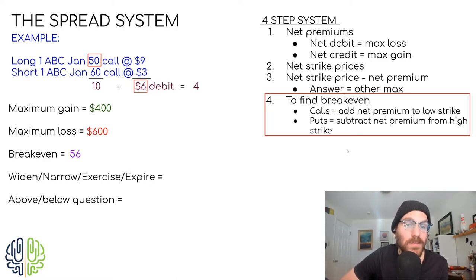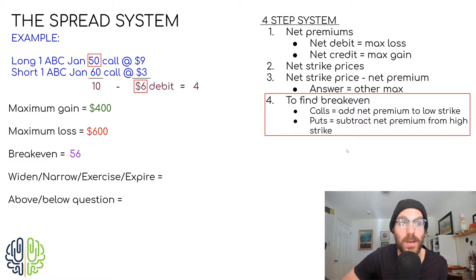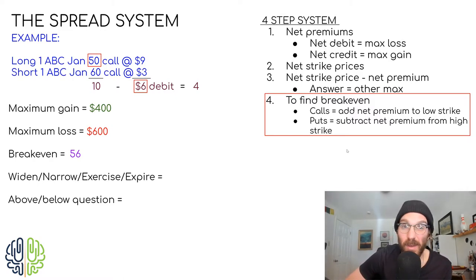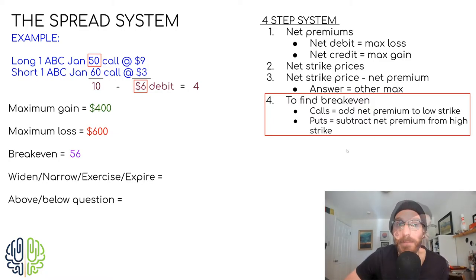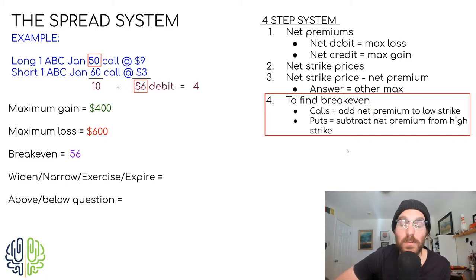If you ever come across a question where they're saying that break-even is outside of the spread, there's no way that's the right answer — maybe that's a way to eliminate some wrong answers. Just so you know, if this was a put spread, we would have counted down from the high strike price — 'put down' — and our break-even would be 54. But it's not. It's a call spread, so we have a break-even of 56. That's how you get to maximum gain, maximum loss, and break-even.